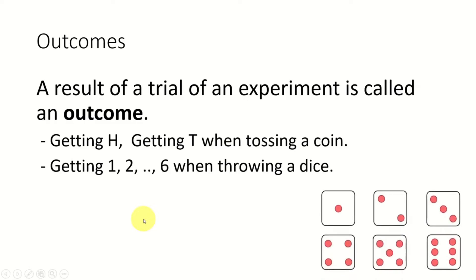Let's move on to what is meant by outcome. The result of a trial of an experiment is called an outcome. For example, if you throw a dice, the possible outcomes can be getting one, two, three, four, five, or six. If you toss a coin, there are only two possible outcomes: getting heads or getting tails.